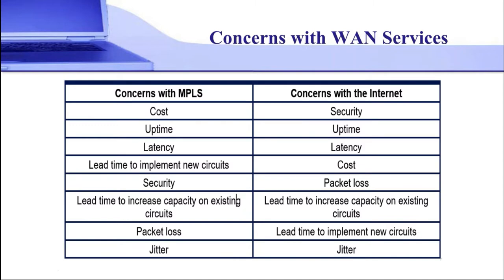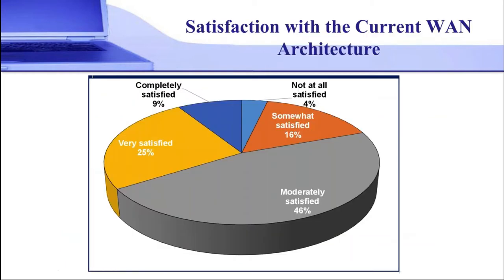I also want to point out some concerns people have with current WAN services. Primarily, network organizations deal with two services: MPLS and the internet. When I think of the issues with MPLS, I think of cost and long lead time. When I think of the issues related to the internet, I think of security and performance. So as we go forward with new WAN solutions, we have to be very cognizant of how we overcome those issues.